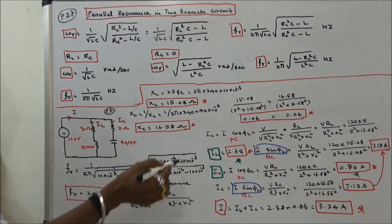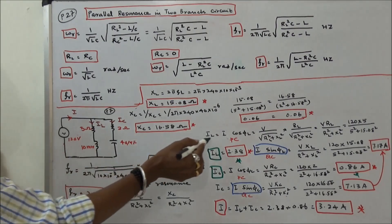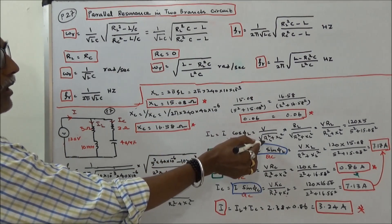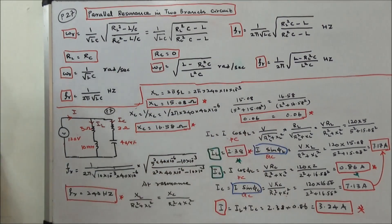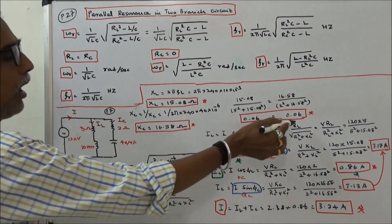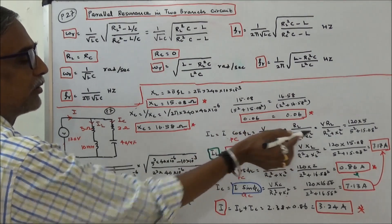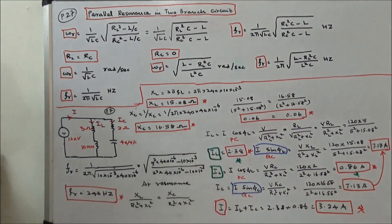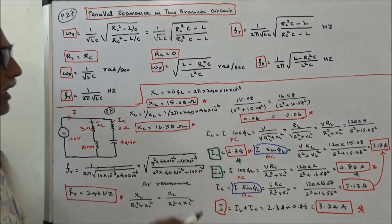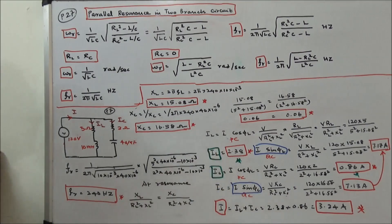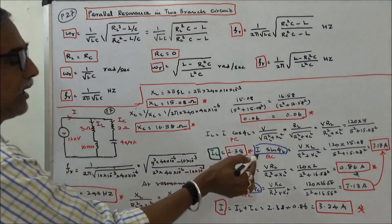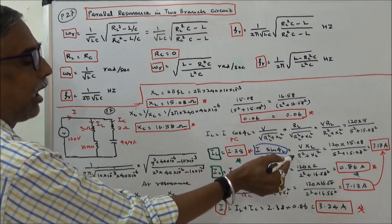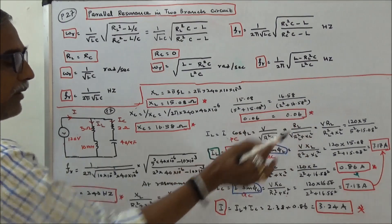Next we calculate the phase component of I_L. I_L (phase) = V·R_L / (R_L² + X_L²), where I = V / √(R_L² + X_L²) and cos φ_L = R_L / √(R_L² + X_L²). Substituting all values, the phase component of I_L is 2.38 A. The quadrature component is V·X_L / (R_L² + X_L²) = 7.17 A.